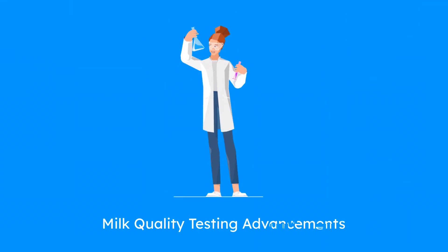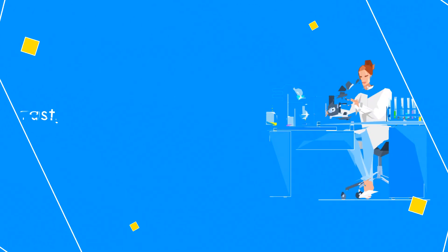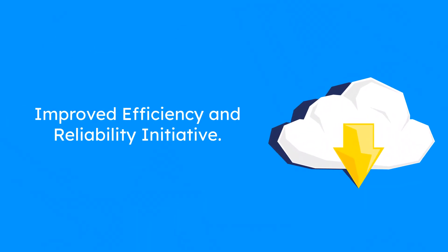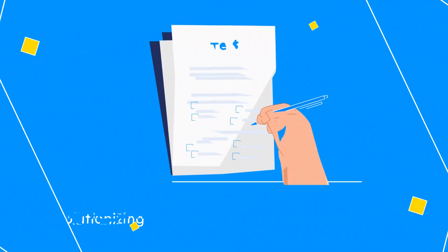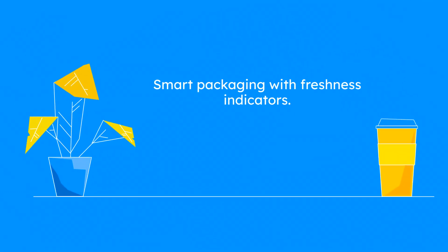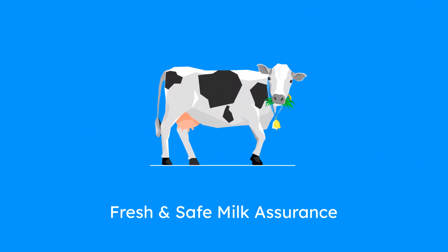SIH 1560: Rapid colorimetric and AI-based methods for milk quality testing. Speeding up milk quality testing while ensuring accuracy is crucial, and this project aims to make the process faster and more reliable. Picture a portable testing system that utilizes AI and machine vision to rapidly assess milk quality — this innovative method will replace traditional time-consuming tests. Additionally, smart packaging with freshness indicators will keep track of the quality of processed dairy products. It's a leap forward in ensuring fresh and safe milk from farm to table.